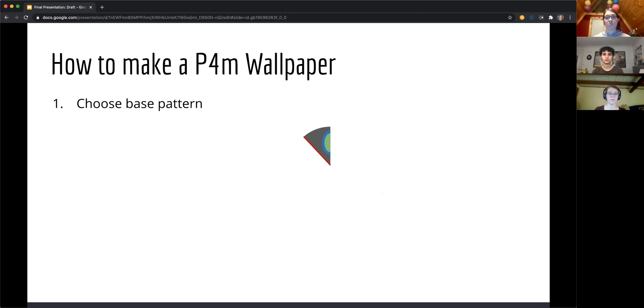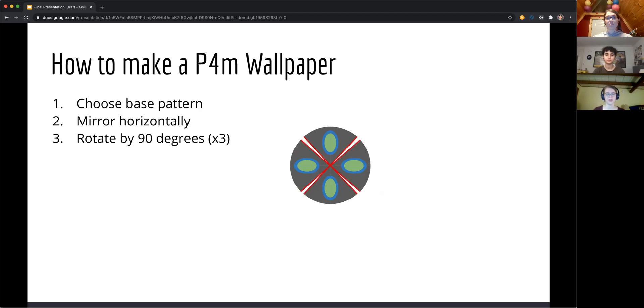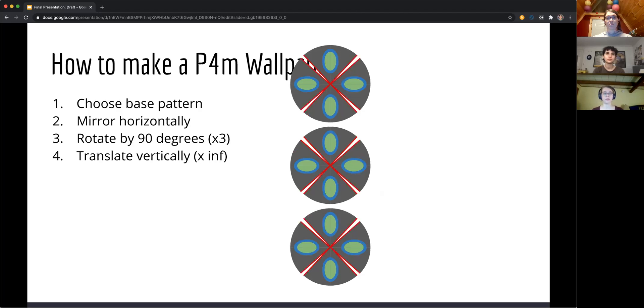And as Raquel described, a P4M is going to be something that has four-fold rotational symmetry plus a mirror. So to do this, we take a base pattern and we're going to mirror it horizontally. Now that we've mirrored it horizontally, we can start to rotate it around to get the four-fold rotational symmetry. And now that we have this, we can translate it both vertically and horizontally until we fill the page.